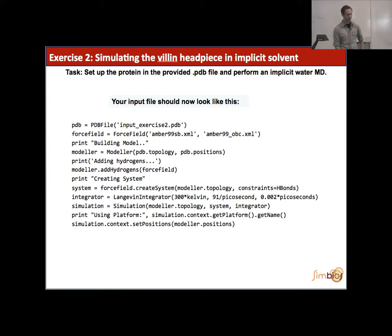Alright, so if your input file looks now like this, then you're good to go. If it doesn't, check it out. The force field is Amber99SB. The water model is, instead of TIP3P, it's now Amber99-OBC. After you specify a force field in the modeler class, you specify that you want to add hydrogens to this force field parameter. And then it should work. And remember the 91 per picosecond.